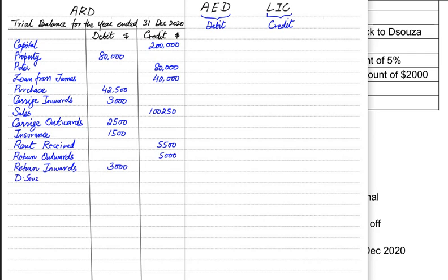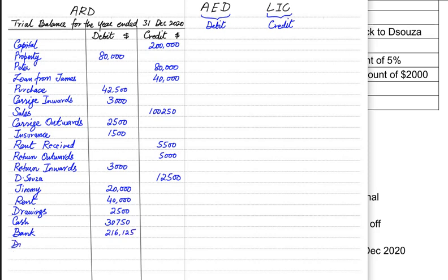Return inward is debit in nature because goods are coming into the business. D'Souza is a liability, therefore it is a credit balance. Jimmy was a customer, therefore it was a debit balance. Let me finish all of these, and at the end we need to balance this trial balance.